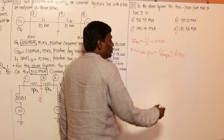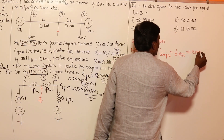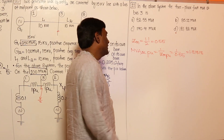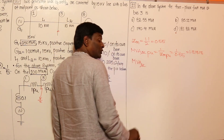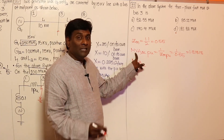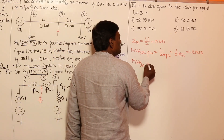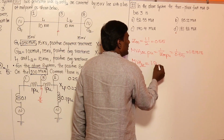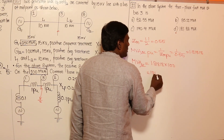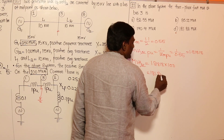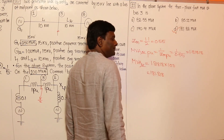So the fault MVA in per unit is 1 / 0.55 = 1.81818 per unit. The actual MVA is per unit multiplied by base MVA: 1.81818 × 100 = 181.82 MVA.